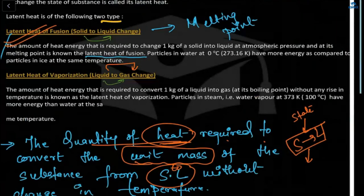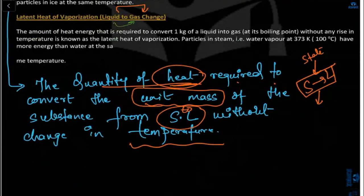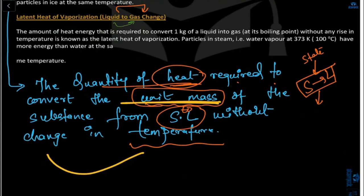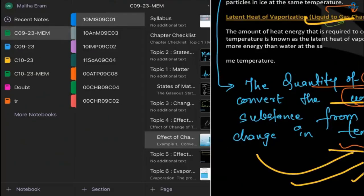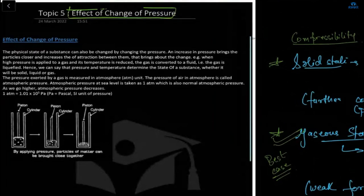So to summarize: fusion is solid to liquid, and vaporization is liquid to gas. Latent heat of fusion is the heat required to convert a unit mass from solid to liquid without change in temperature; similarly for latent heat of vaporization, from liquid to gas without change in temperature. Now next we will learn about the effect of change of pressure, but before that we will cover evaporation.